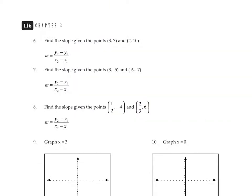On the next page we're going to practice using the slope formula. Find the slope given the points (3, 7) and (2, 10). This implies there's a line going through these two points, and we need to find its slope. We can plug these points into the slope formula.